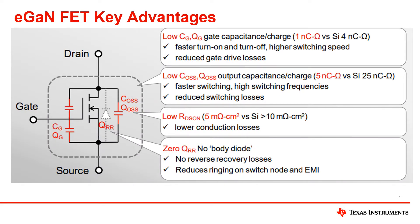Due to the difference in structure, GANFETs have a few key advantages to highlight. The GANFET has a lateral structure, which helps to have a low gate capacitance, gate charge, output charge, and output capacitance. This enables higher switching speeds with reduced gate drive losses and reduced switching losses.